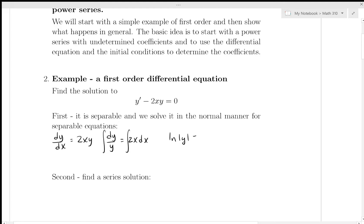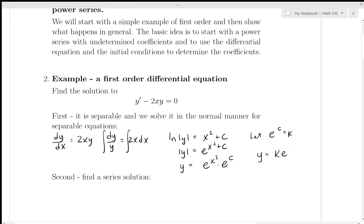Integrating gives log|y| equals x² plus c. Exponentiating both sides gives e^(x² + c). Since e to any power is always positive, I remove the absolute value signs, separate e^(x²) and e^c, and rename e^c as k — it's just some constant. The solution to this differential equation is y = k·e^(x²), where k is determined from the initial condition.